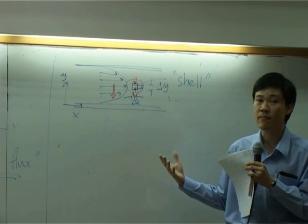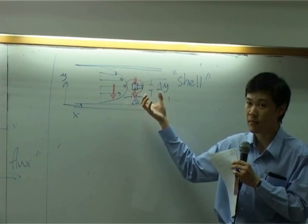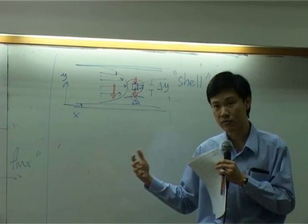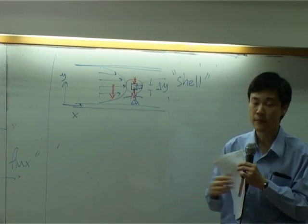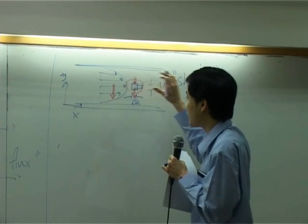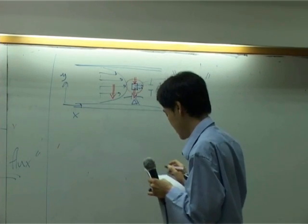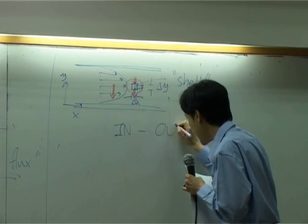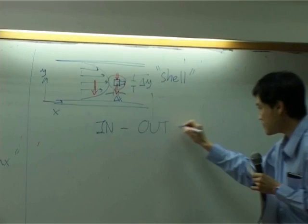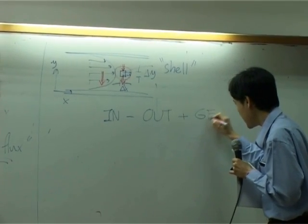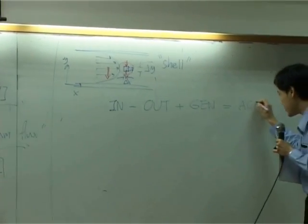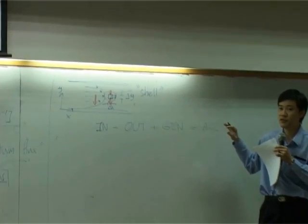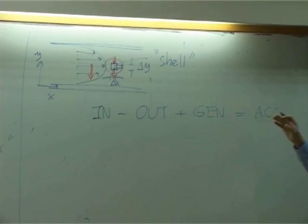Just like in mass or energy balance, you consider system boundaries and you take anything going in and anything going out, take a balance. Right? Equation for momentum balance looks something like this. You have in minus out plus generation equal to accumulation. Same thing, exactly the same thing as what you have done for mass and energy.